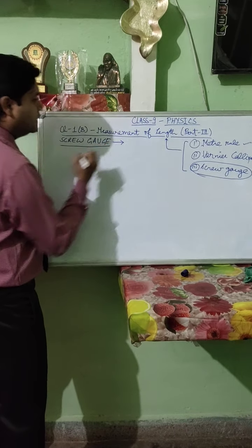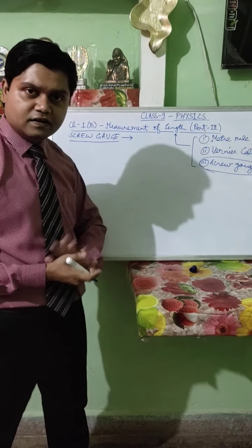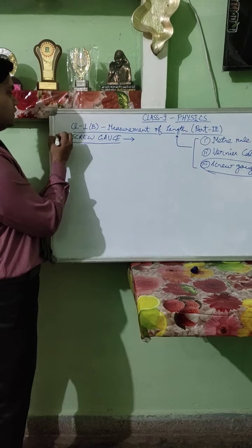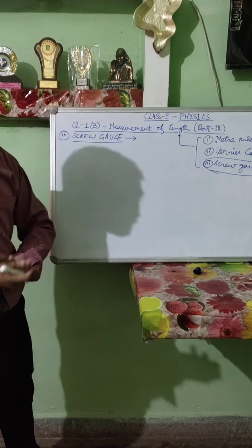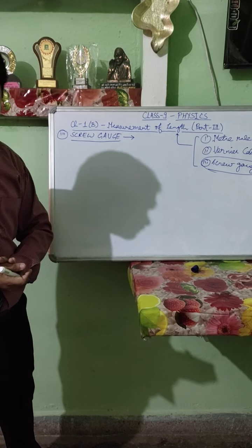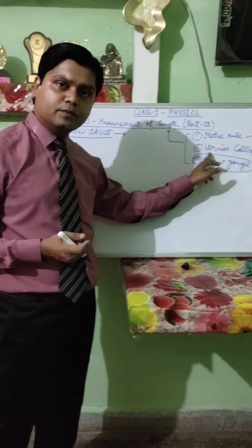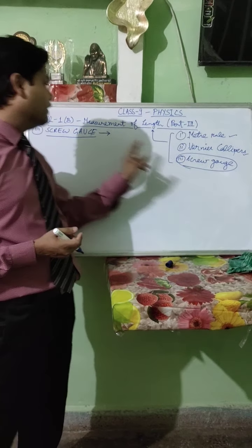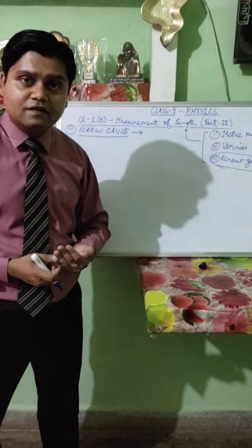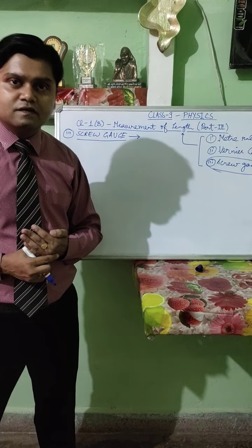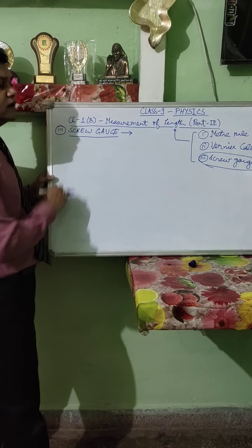Screw gauge is the third device used for measurement of length. Meter rule can measure up to the accuracy of 1 decimal place, vernier calipers up to 2 decimal places, and screw gauge can measure up to the accuracy of 3 decimal places. The more accuracy an instrument has, the better results it gives. So for better accuracy, we use the screw gauge.